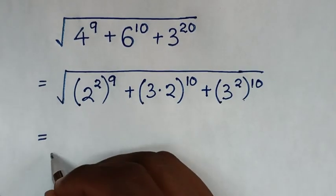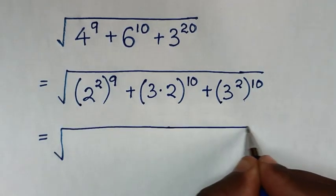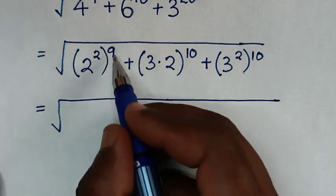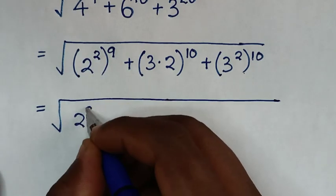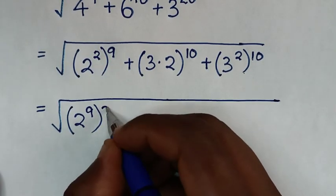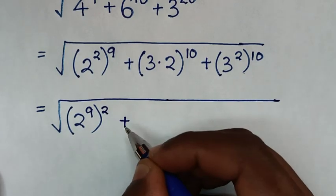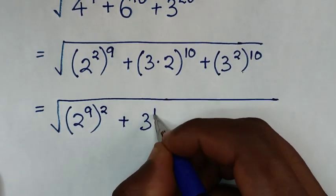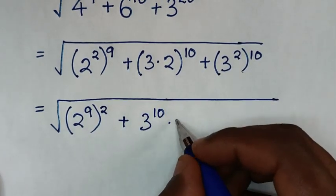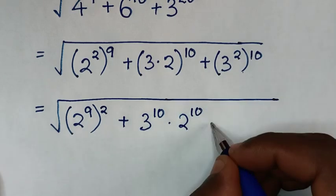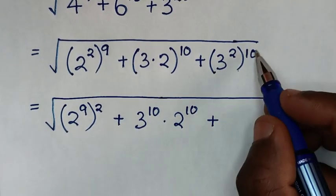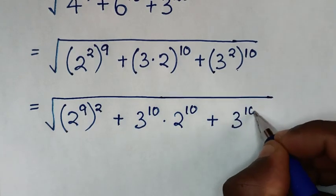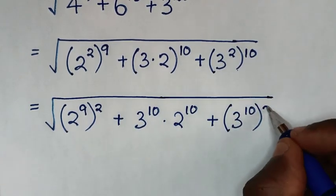So it will be equal to the square root of — when we take the inside power of 2 outside — it will be 2^9, then bracket power of 2, then plus. In the 6^10 term, we take power of 10 inside the bracket, so it will be 3^10 times 2^10, then plus 3^10 bracket power of 2.